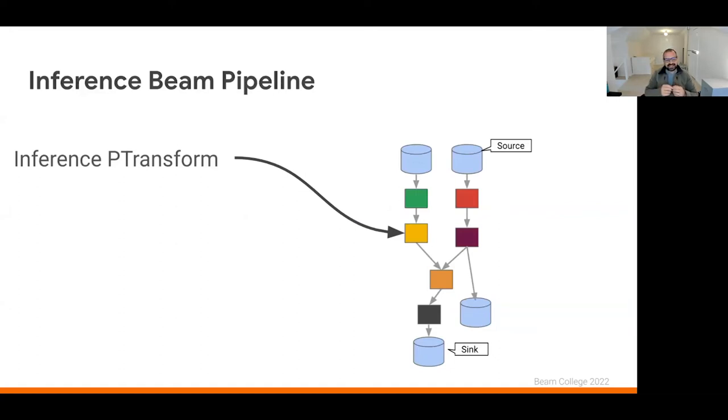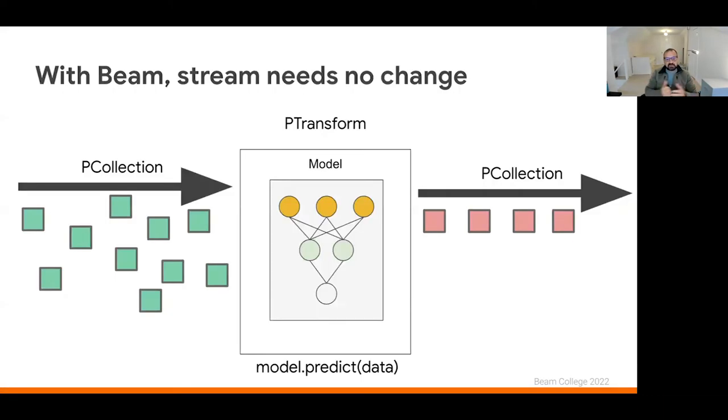This will then become a P transform that we can put into a beam pipeline. And the nice thing is that it can be as simple as we have a source of information, we're reading it, parsing it, then doing the prediction and then moving it onto a sink. So a very sequential pipeline, or it can be a pipeline with many branches and joins where the prediction just forms one part of the whole processing pipeline. And again, this is being Beam, we know that if the source of the data, instead of being files is a stream of information, for example, coming from Kafka, we don't actually have to change the P transform. So our P collection just becomes unbounded, the transformation encapsulated in P transform will do the predictions, and our P collection will have a continuous stream of data coming out of the call.